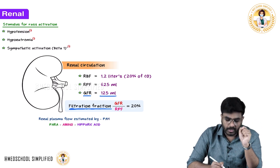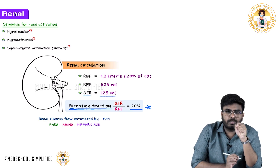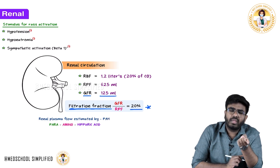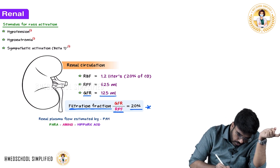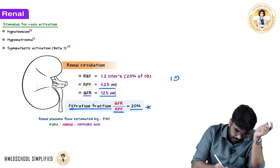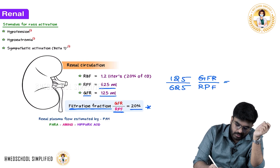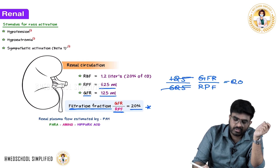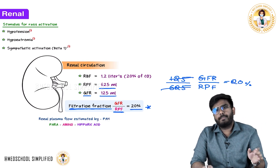The normal GFR is 125 ml per minute. The filtration fraction is 125 divided by 625, which equals 20%. So the normal filtration fraction is 20% — meaning 20% of the plasma is actually filtered.